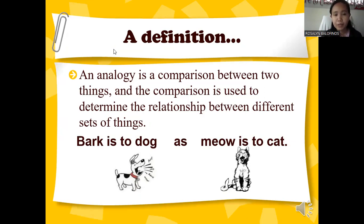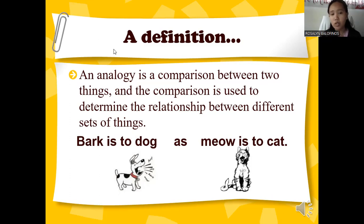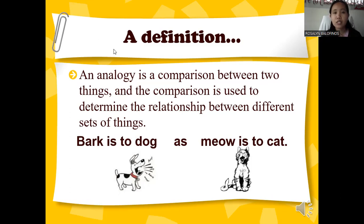Here is an example: 'bark is to dog as meow is to cat.' Let us identify the relationship of the first pair of words to the second pair. The relationship of bark and dog talks about the sound of a certain pet or animal. So the second pair should also follow the same relationship — meow is the sound produced by the cat.